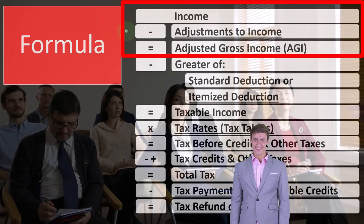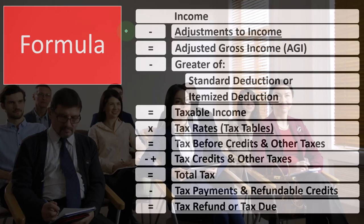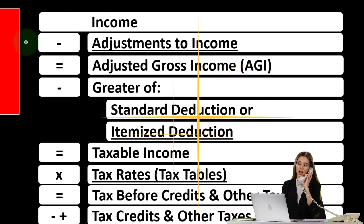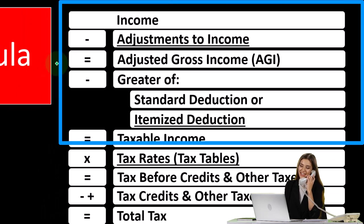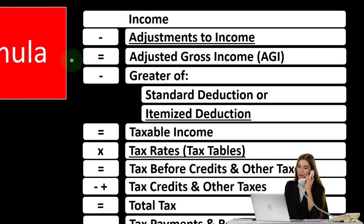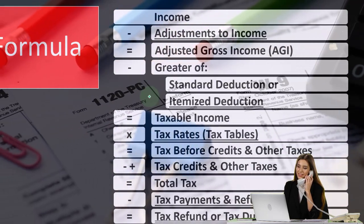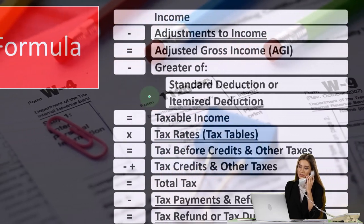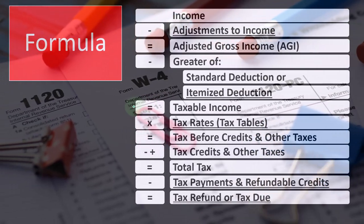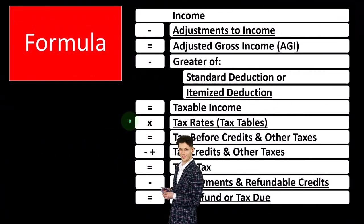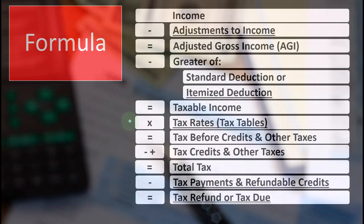These are above-the-line deductions, referred to as adjustments to income. You can also think of it as a contra income account, reducing income like a sales returns type of account. Adjusted gross income is another subtotal on the way down — you might compare this to a multi-step income statement for a business, getting down to taxable income. Then the greater of the standard deduction or itemized deductions gets us to taxable income, which you can compare to net income for a business. Then we apply a tax rate — really a tax table — using a progressive tax system to get the tax.